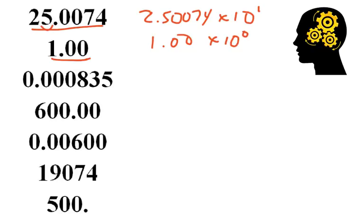Okay, here we go. 2.50074, because that's all 6 significant figures, times 10. That's greater than 1, so I'm going to make it a positive, and that's 1, so 10 to the 1. The next one, 1.00, that's 3 significant figures. I can leave it alone or say times 10 to the 0.